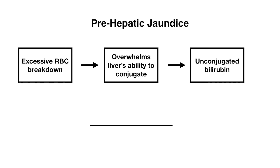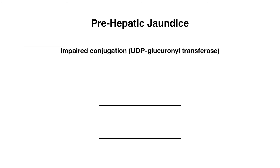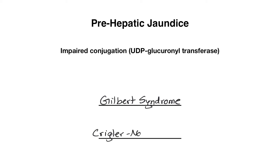Situations in which we would get excessive red blood cell breakdown include hemolytic anemia, of which there are many different types. Another situation involves genetic conditions with impaired conjugation due to a deficient amount of UDP glucuronosyltransferase — the enzyme responsible for conjugating bilirubin. The two conditions are Gilbert syndrome, which is a milder form because you have a decreased amount of UDP glucuronosyltransferase, and Crigler-Najjar, the more severe form, where there is an absent amount of UDP glucuronosyltransferase, giving it a very poor prognosis overall.